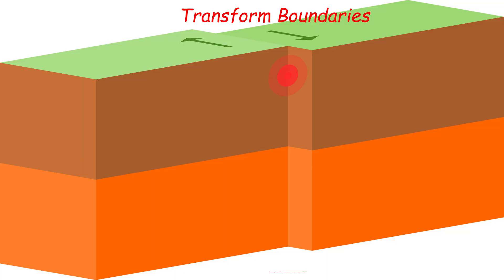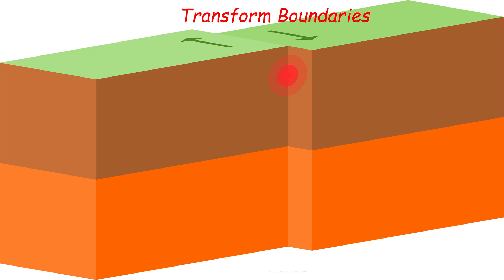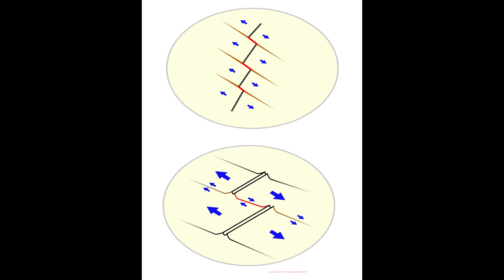Transform boundaries occur when two plates grind past one another along transform faults, where plates are neither produced nor destroyed. Along a fault, strong earthquakes can occur. An example of a transform boundary is the San Andreas Fault in California.